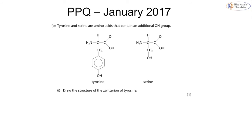Let's look at a past paper question for amino acids from the January 2017 paper. We are asked to draw a zwitterion for tyrosine. Remember, a zwitterion is when the hydrogen from the carboxylic acid group transfers over to the amino group. So we're going to have a structure with H3N+.